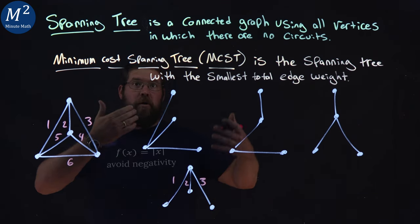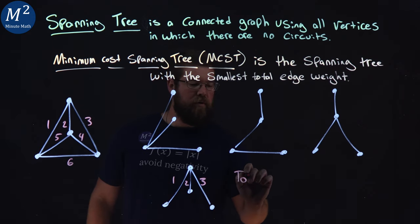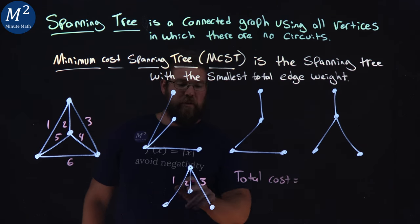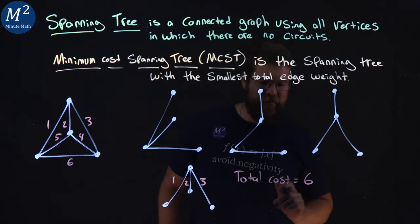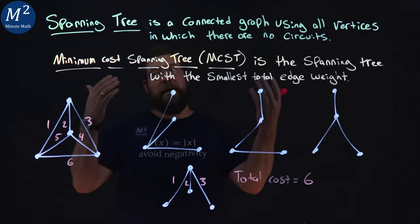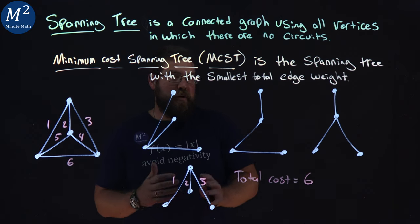We have a spanning tree we've created. It's the minimum cost spanning tree. It's the lowest cost spanning tree on here. It has a total cost of one plus two plus three, which is six right there. So that would be our minimum cost spanning tree.